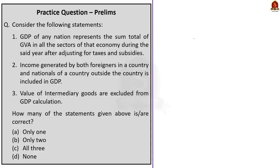Three statements are given and we have to find how many are correct. Statement one: GDP of any nation represents the sum total of GVA of all sectors of that economy during the said year after adjusting for taxes and subsidies — this statement is correct. Statement two: the income generated by both foreigners in a country and the nationals of the country outside the country is included in GDP — this statement is incorrect.